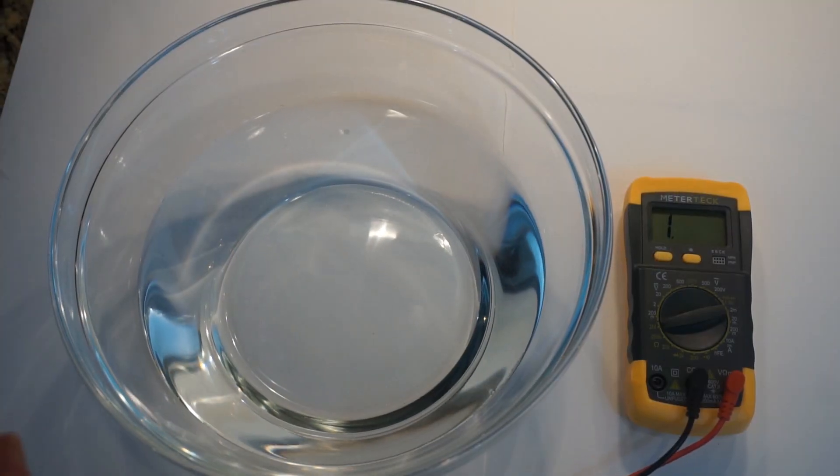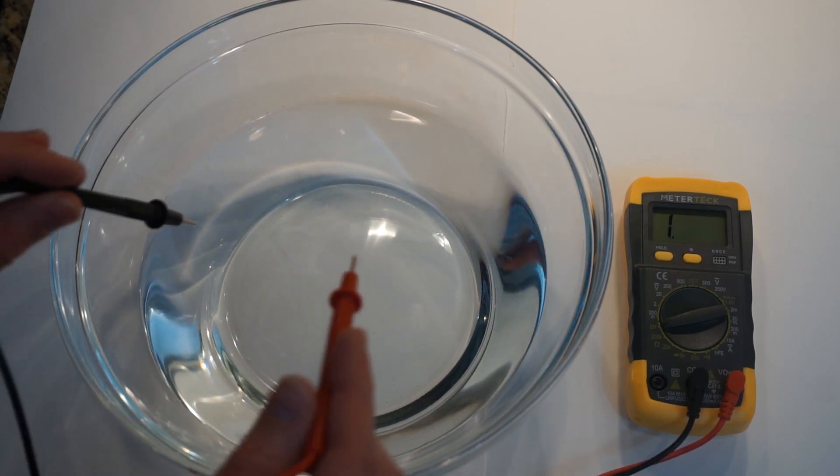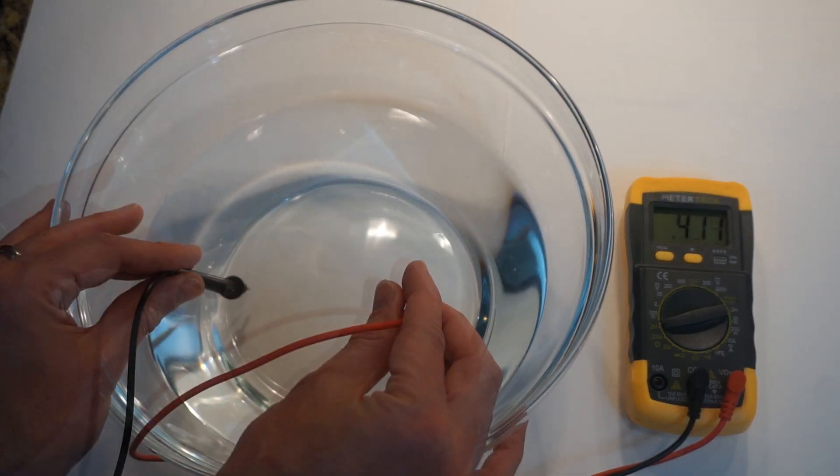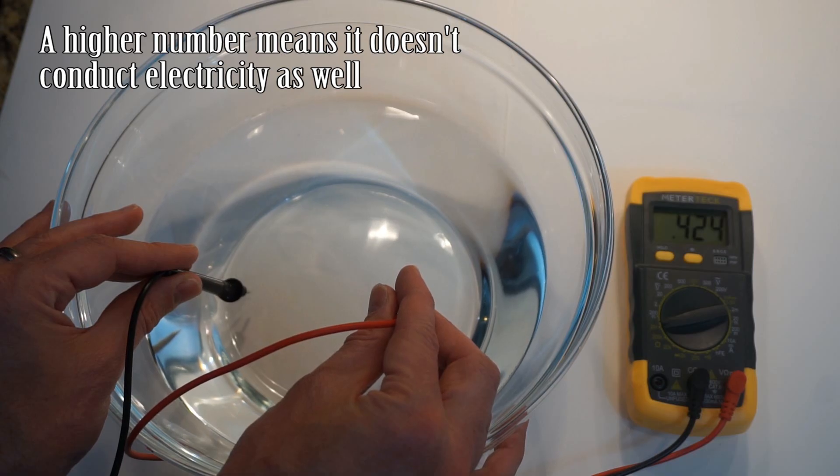So first, what I have here is regular tap water. Let's test how resistive the tap water is. About four or five inches apart, we have 0.4 megaohms.